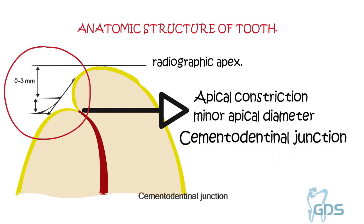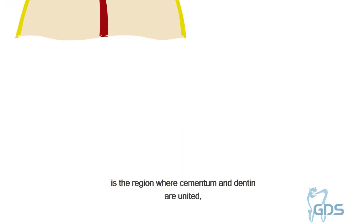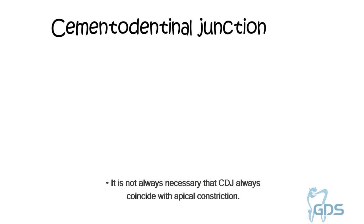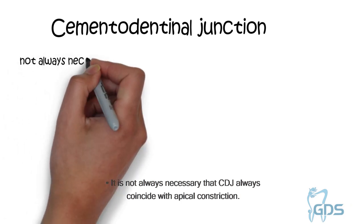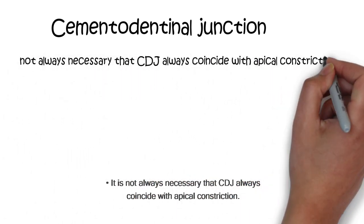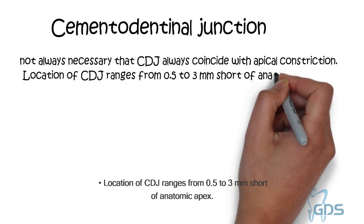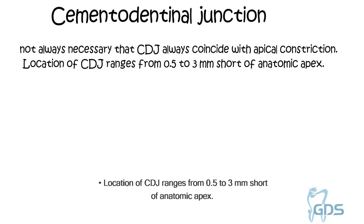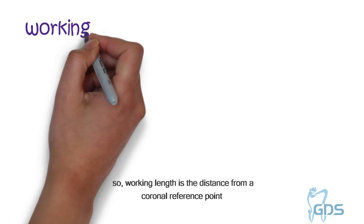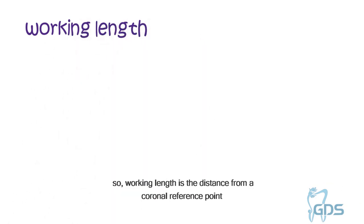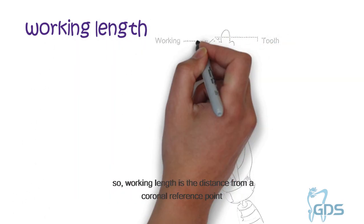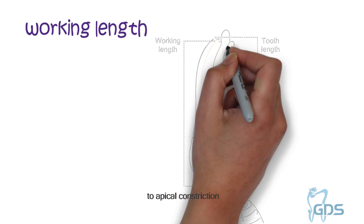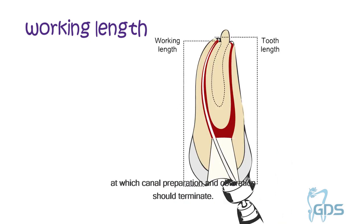The cementodentinal junction (CDJ) is the region where the cementum and dentine are united. It is not always necessary that the CDJ coincides with the apical constriction. The location of the CDJ ranges from 0.5 to 3 mm short of the anatomic apex. So, working length is the distance from the coronal reference point to the apical constriction at which canal preparation and obturation should terminate.